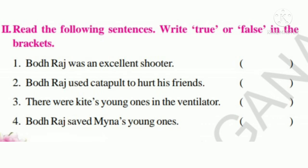Dear children, here is one textual exercise for you. Read the following sentences and write true or false in the brackets. First one: Bodhraj was an excellent shooter. Yes, it is right. We know that Bodhraj was an excellent shooter. So our answer is True.